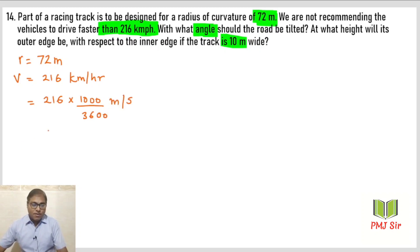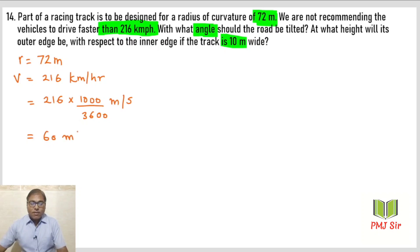216 km/h ko meter per second mein convert karte hain. 216 into 5/18 karne par yeh cancel hokar 60 meter per second aa jaata hai.